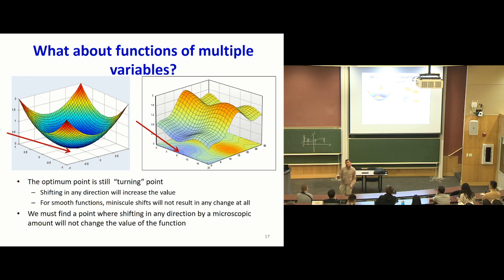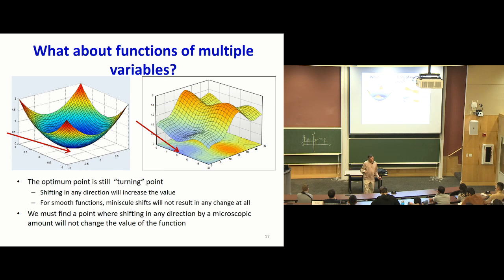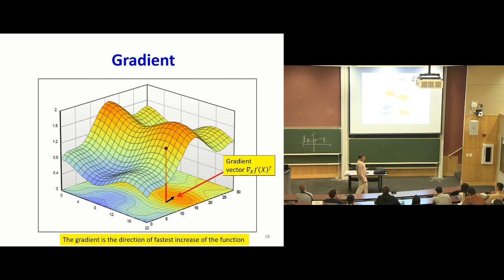What about a function of multiple variables? The input is multi-dimensional. The minimum is still going to be a turning point where the derivative is zero — meaning a small shift in any direction should not change the value of the function. For multivariate functions we have defined something called the gradient, which is a vector of partial derivatives. It has an interpretation: when you walk in the direction of the gradient, the function increases fastest. The gradient is the direction in which the value of the function is going to increase the most.